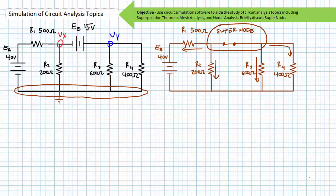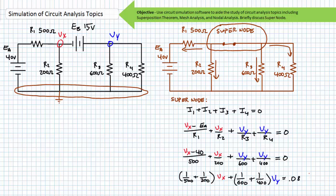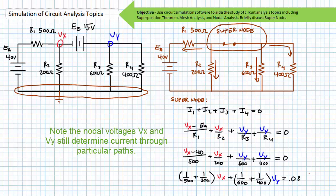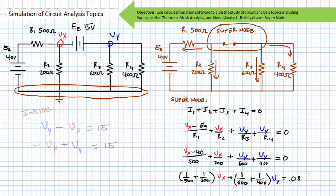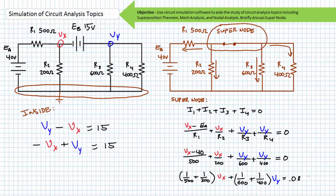Following KCL analysis of the supernode, we'll again return to our previous assumption of two independent nodes VX and VY, grounding the bottom node as our reference. Assuming all current is leaving the supernode, the KCL analysis is I1 + I2 + I3 + I4 = 0. Substituting in the necessary values and placing in the general format, we're left with (1/500 + 1/200)·VX + (1/600 + 1/400)·VY = 80 mA. Inside the supernode, given that EB is strung between VY to VX positive to negative, it can be stated that VY − VX = 15 volts, giving us −VX + VY = 15 in general format.